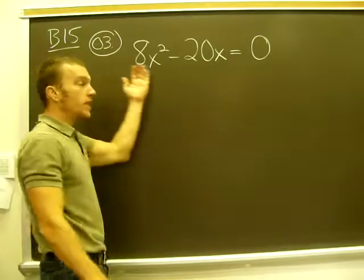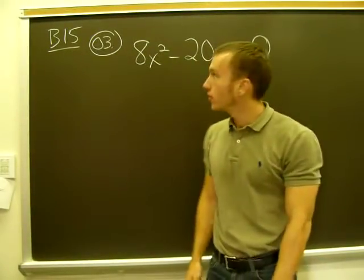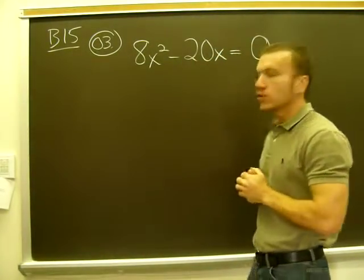Okay, B15, problem number three. Directions are solve by factoring. 8x squared minus 20x equals zero.